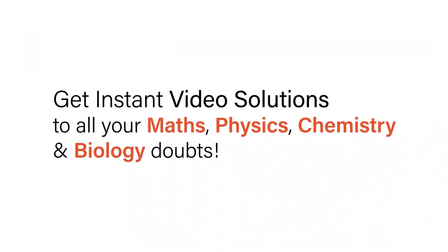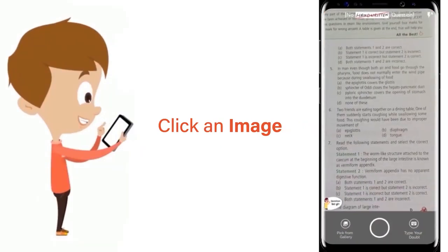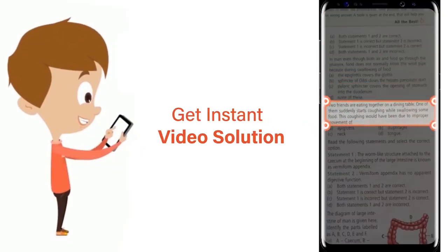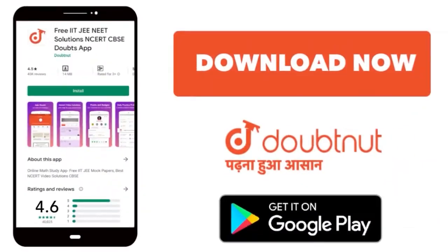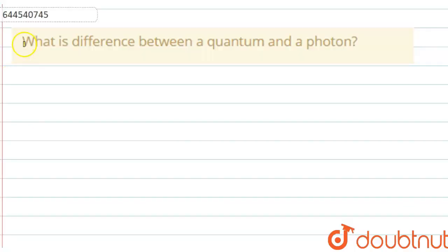With Doubtnet, get instant video solutions to all your maths, physics, chemistry, and biology doubts. Just click the image of the question, crop the question, and get instant video solution. Download Doubtnet app today. The question says: what is the difference between a quantum and a photon?